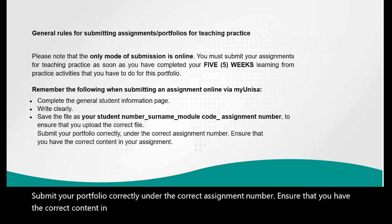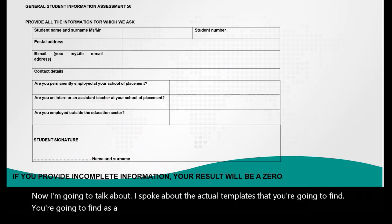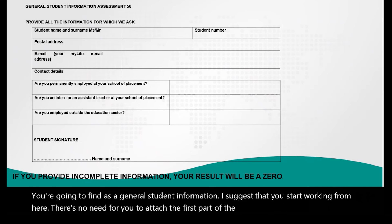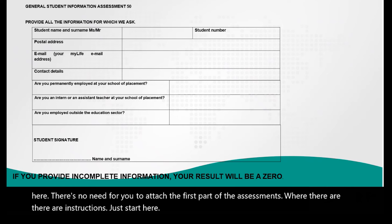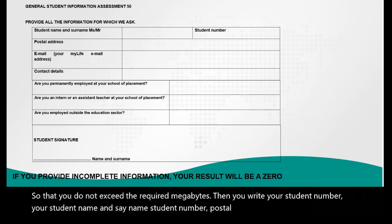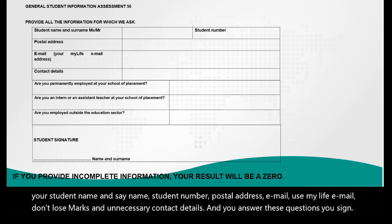Now I'm going to talk about the actual templates. You are going to find a general student information section — I suggest you use that as your starting point. There's no need to attach the first part of the assessment where the instructions are; just start from the template so that you do not exceed the required megabytes. Write your student number, student name, postal address, and email — use your myLife email so you don't lose marks.